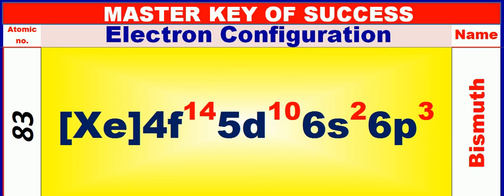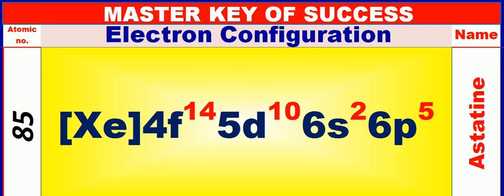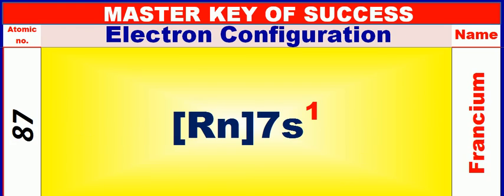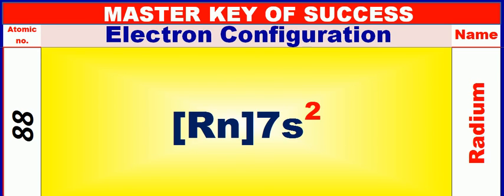Atomic number is 83 and name of atom is Bismuth. Atomic number is 84 and name of atom is Polonium. Atomic number is 85 and name of atom is Astertine. Atomic number is 86 and name of atom is Radon. Atomic number is 87 and name of atom is Francium. Atomic number is 88 and name of atom is Radium.